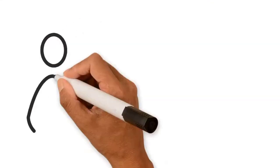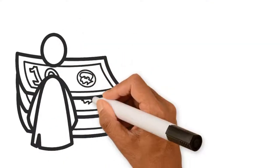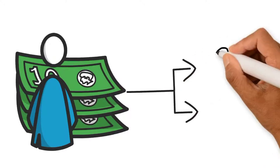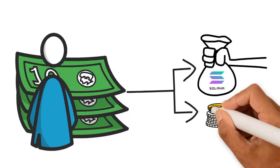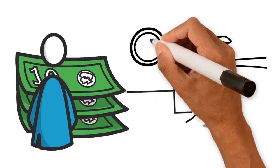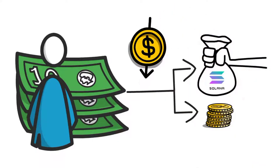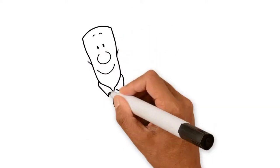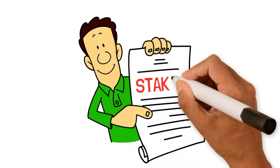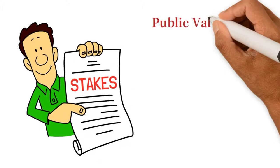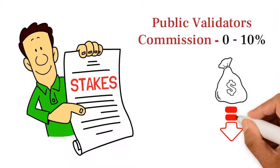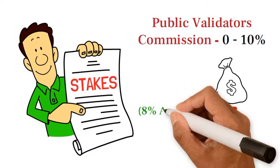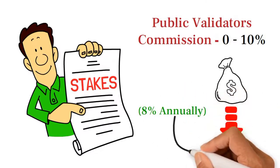In exchange, a validator earns revenue in two ways. Charging a commission on the rewards generated by the stakes they hold. A smaller fee for the votes submitted as leader. This is typically very small unless the validator also holds a lot of stake. Commissions can be set by the validator and for public validators they range between 0 and 10%. So as an example, the current Solana network rewards are around 8% of stake annually.